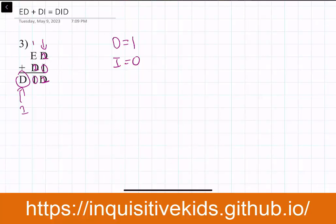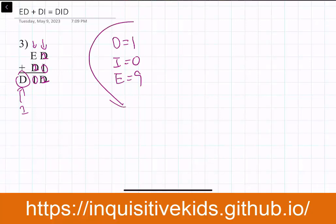So now we can look in the tens column. Something plus one equals ten. Remember, this D is a carried number. So what plus one equals ten? Of course, E has to equal nine, because nine plus one equals ten. And so this is our answer.